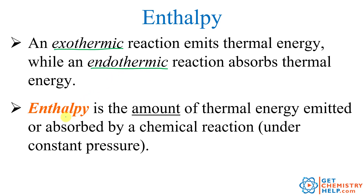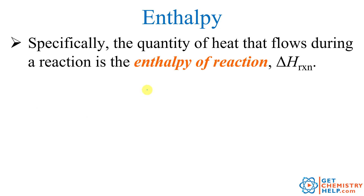Enthalpy is a quantitative measure of how much thermal energy is being emitted or absorbed by a chemical reaction — technically only true when the reaction is under constant pressure. The value we're specifically looking at is the enthalpy of reaction, or delta H Rxn. The delta (triangle) is the Greek letter for change, H is the symbol for enthalpy, and Rxn is for reaction — so this is the change in enthalpy over the course of a reaction.